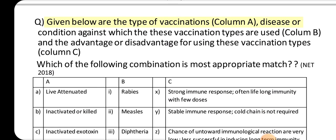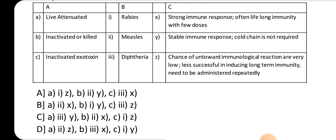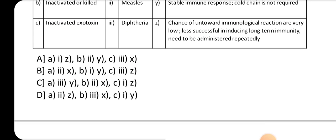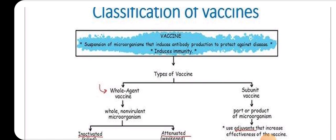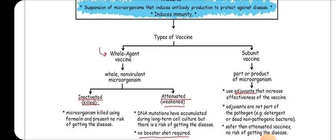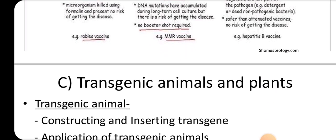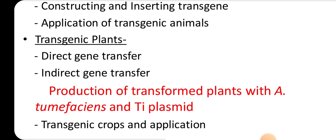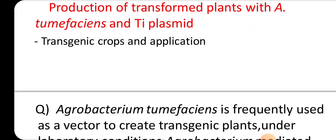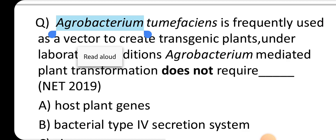Given below are the types of vaccinations (Column A), the disease or condition against which these vaccination types are used (Column B), and the advantage or disadvantage of using these vaccination types (Column C). Which of the following combination is the most appropriate match? NET 2018. A. A-I-Z, B. B-E-Y, C. C-E-X.